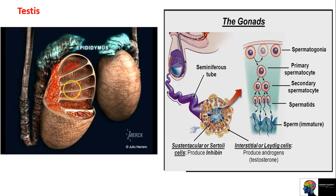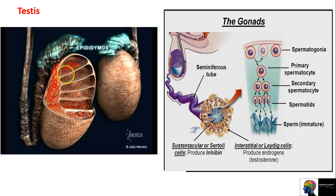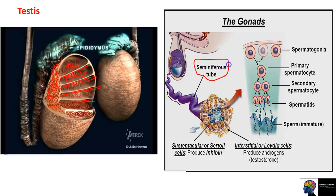There are many coiled structures inside the testis. These coiled structures are the ones inside which sperm production takes place. These structures are visible here. The testis is divided into lobules - many compartments. If you break open the testes, it is divided into many compartments called lobules. Inside each compartment there is a coiled structure called the seminiferous tubule.